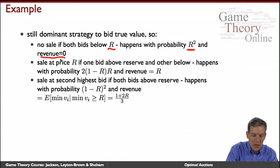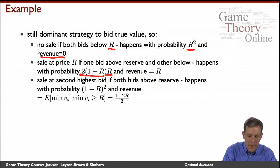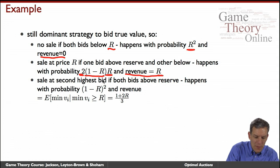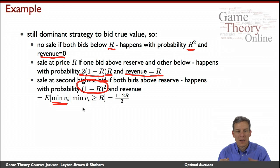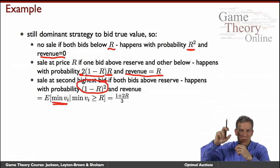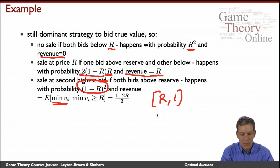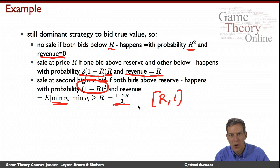When both bids are below R, revenue is zero. The chance that one bidder is above and the other below is 2R(1 − R) — it can happen two ways. In that case the second-highest price is the reserve price R, which is the revenue. When both bidders are above R — probability (1 − R)² — we get the expected minimum of the two values conditional on both being above R. Working out that integral over [R, 1], the expected minimum conditional on both above R is (1 + 2R) / 3.